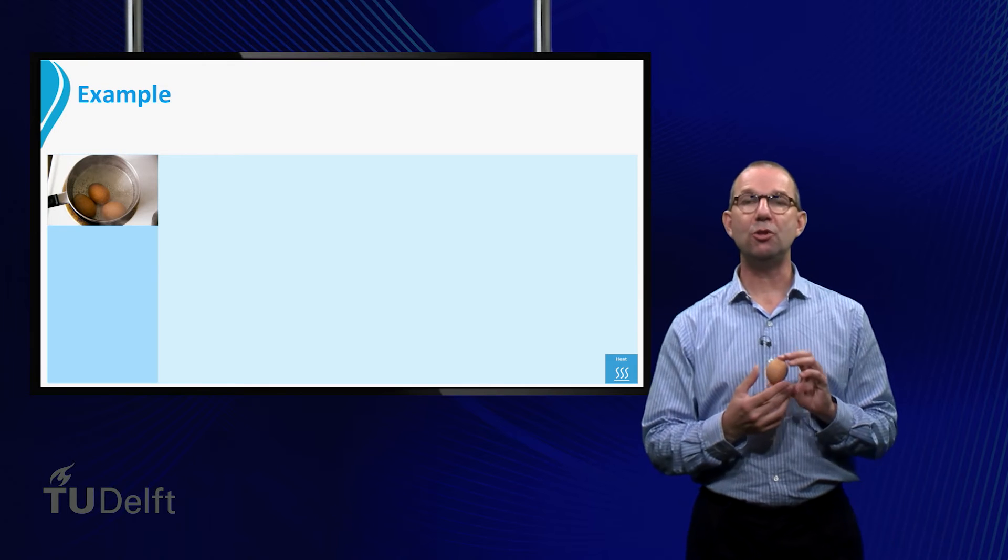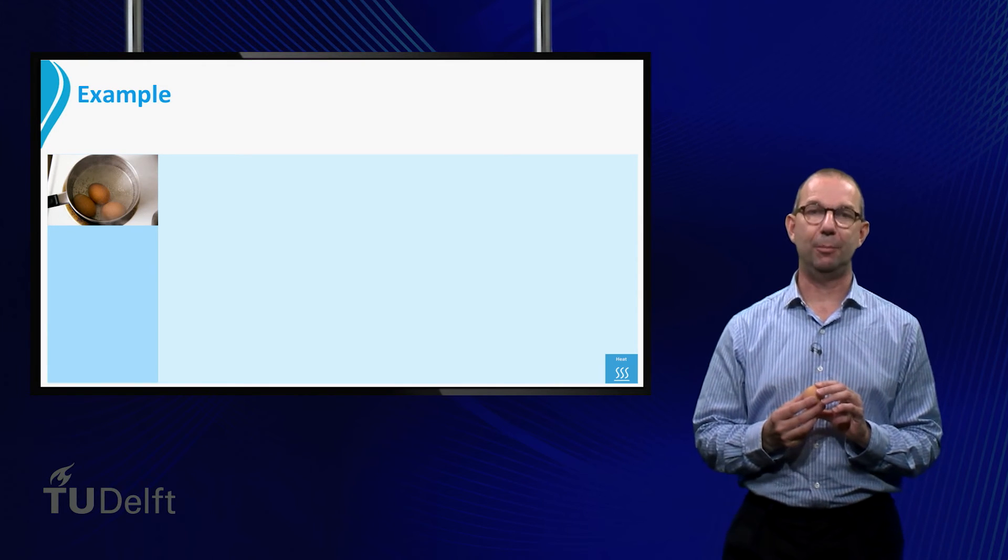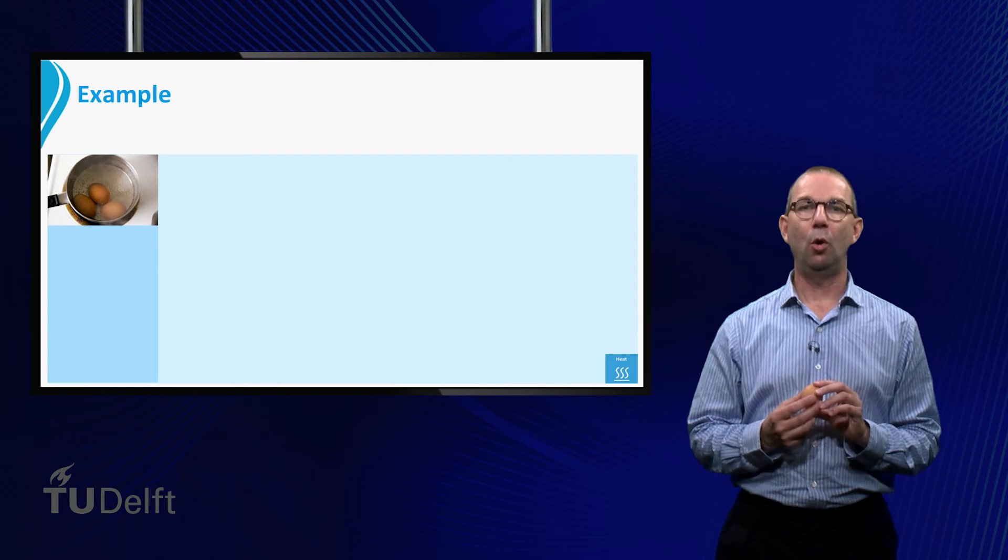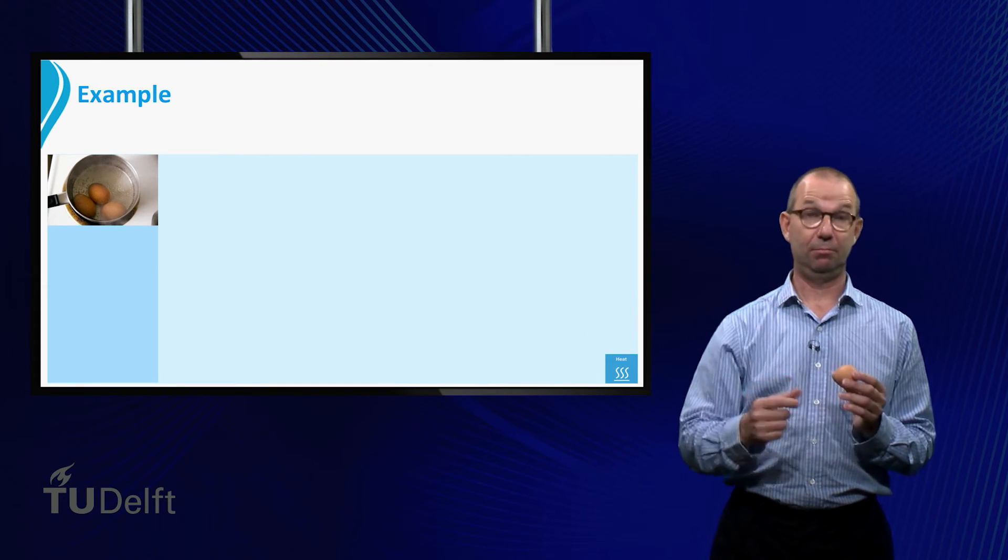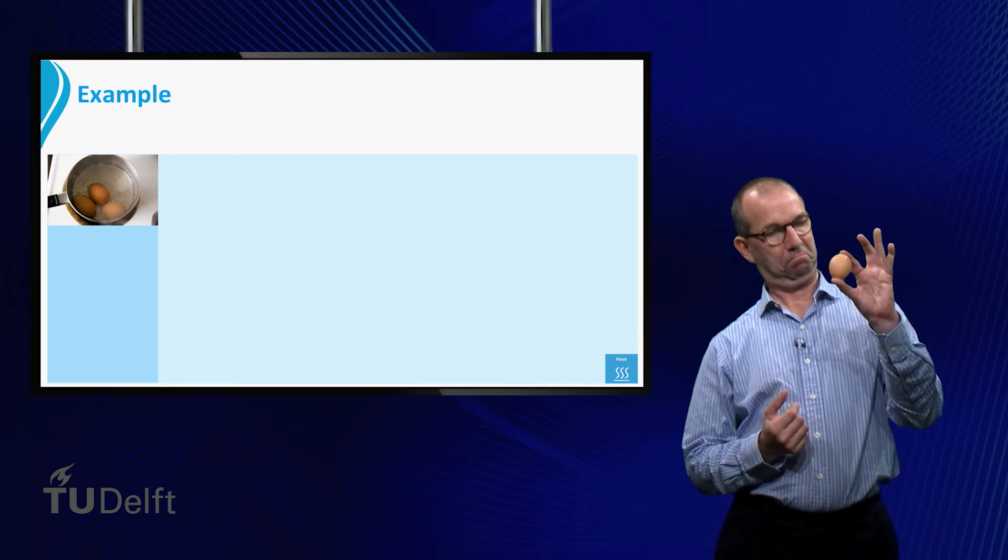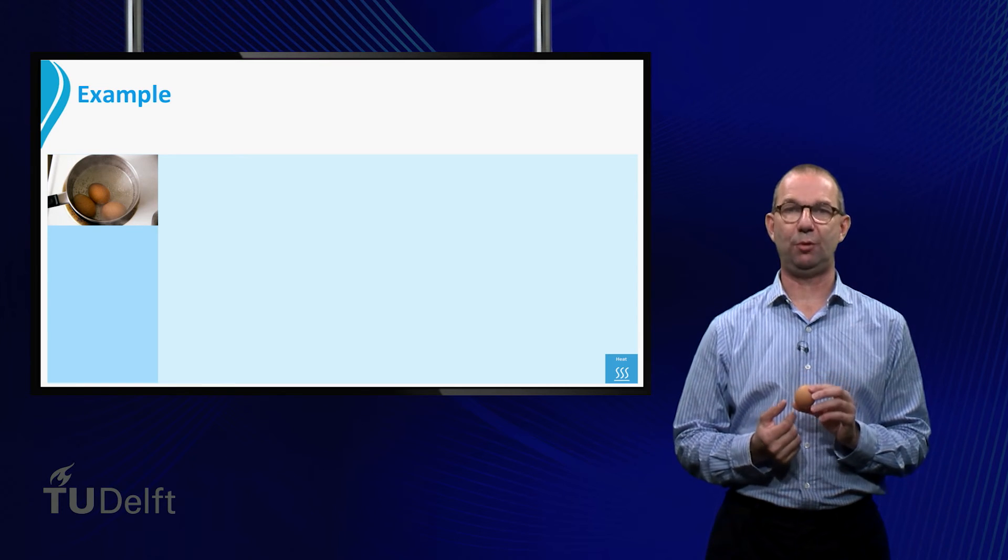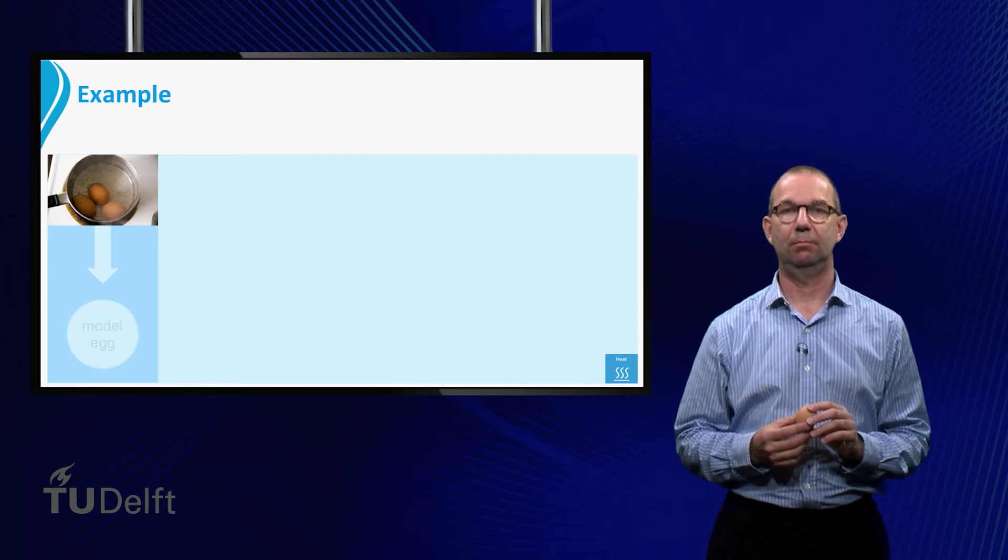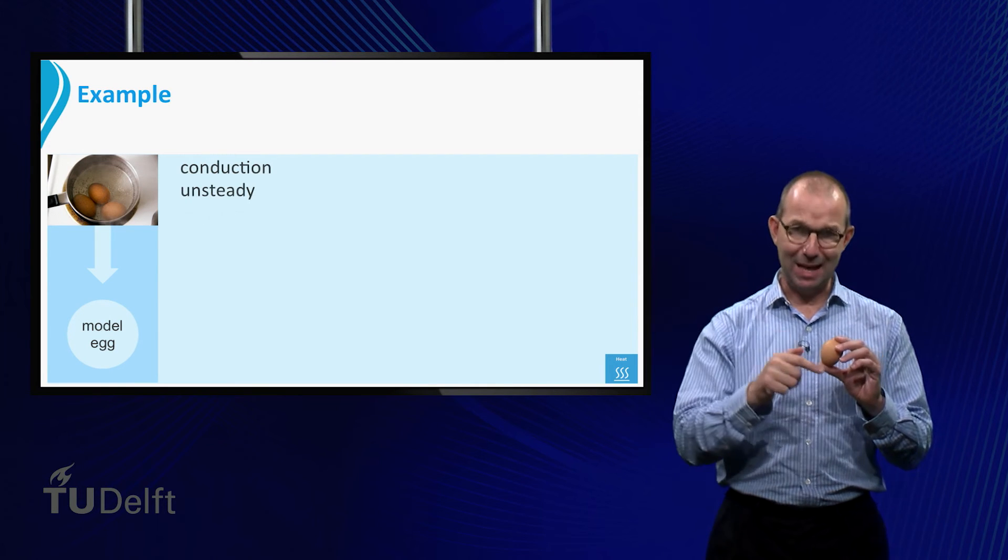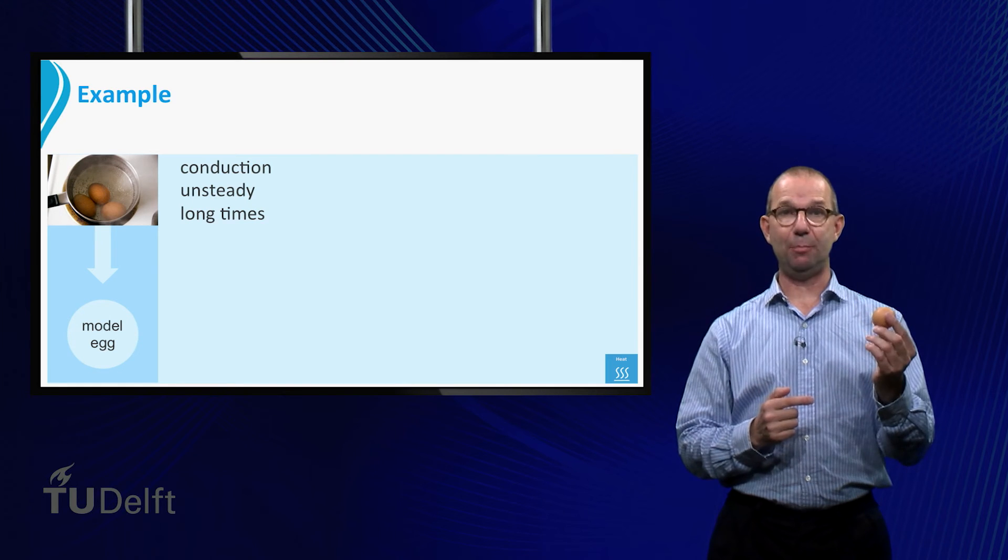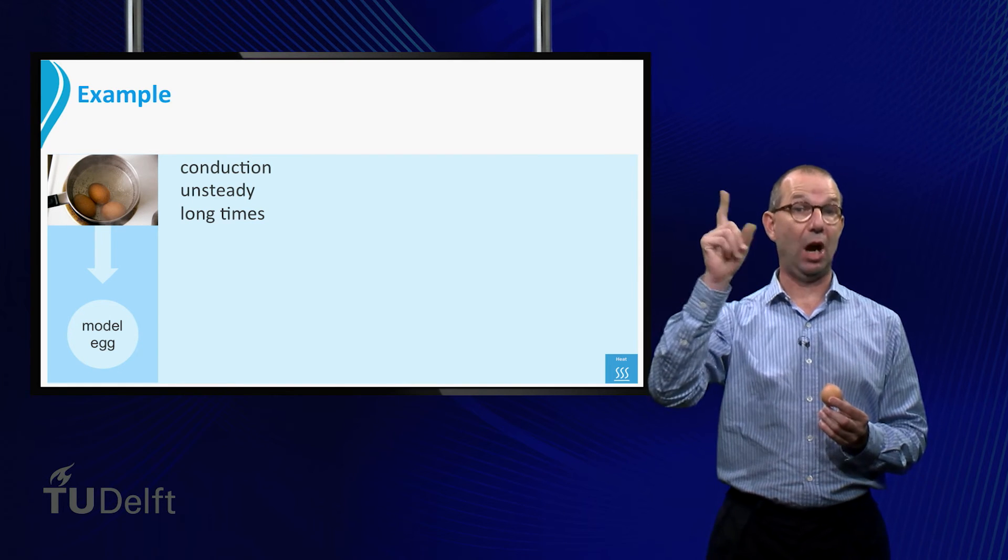We are going to model this using the theory we developed. All we have so far is a theory for a plate, a long cylinder and a sphere. An egg is closest to a sphere, so we use that. So in summary, we have conduction of heat in the egg. It is an unsteady process and it requires long times.